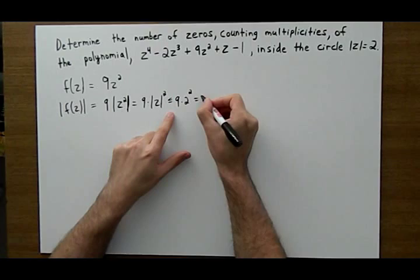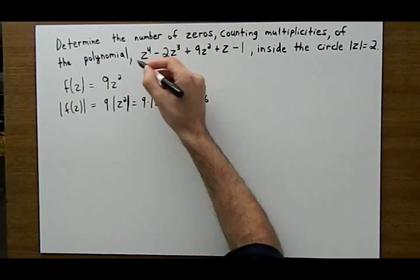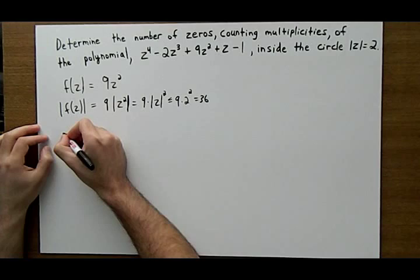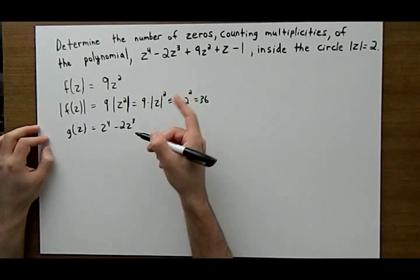And so we can look at g of z now. So we set g of z equal to the remaining terms in the original polynomial. So let g of z equal to z to the 4 minus 2z cubed plus z minus 1.